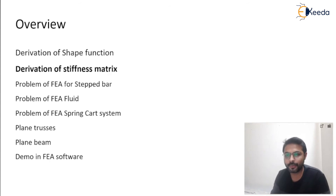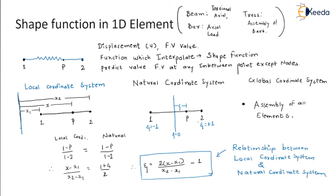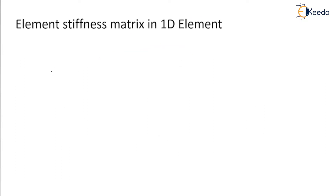In the previous video we defined the relationship between the shape function, the local coordinate system and natural coordinate system, and then we derived the equation for shape function in mathematical formula. So now let's derive the equation for element stiffness matrix in a 1D element.